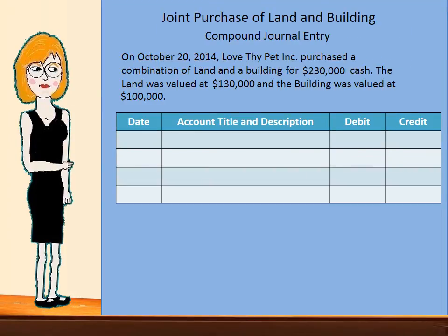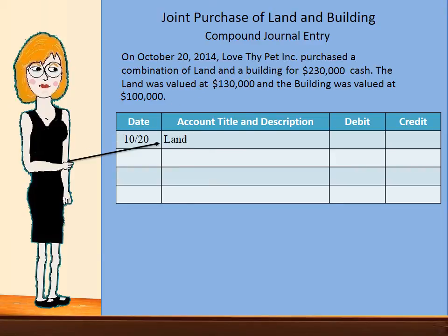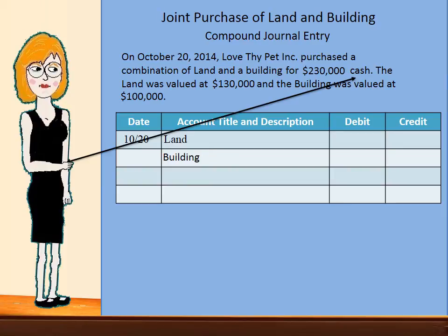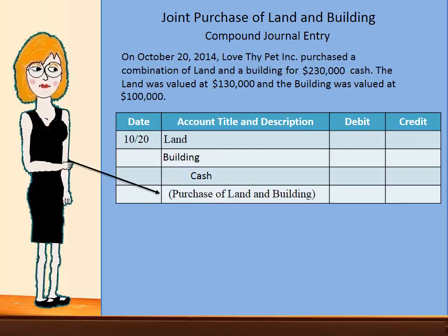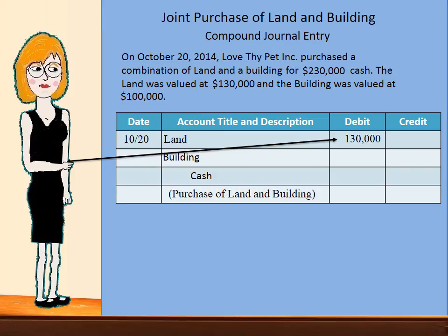Now let's look at a joint purchase of land and building. This will require a compound journal entry. We will start with the date of October 20th, so we will put 10-20. We are purchasing both land and building, and we will want to indicate those highest to lowest. So we will debit land for the acquisition of land, and we will also debit building for the acquisition of the building. And then we will credit cash, because we are paying cash for the building and land. The description will be 'purchase of land and building.' The amount for the land will be $130,000.